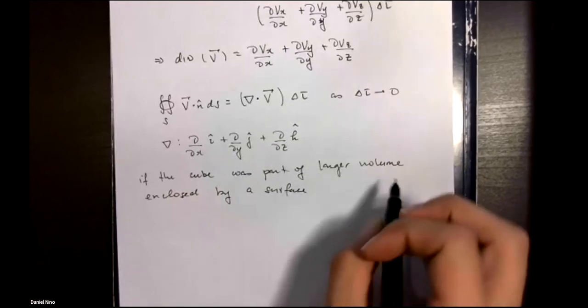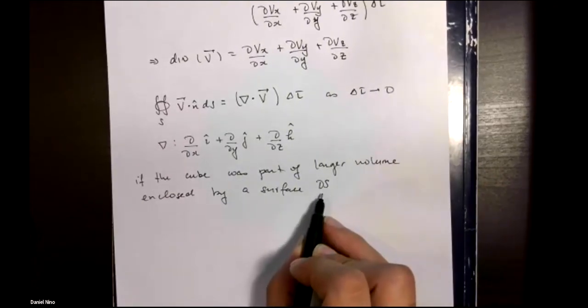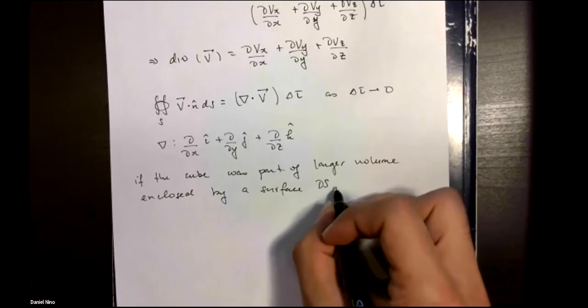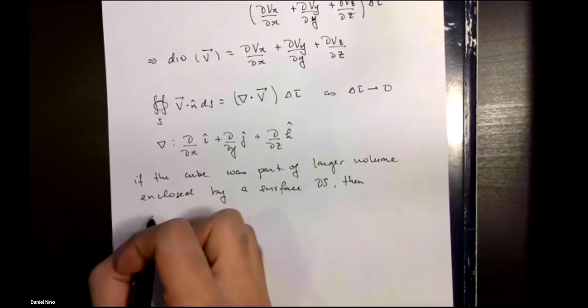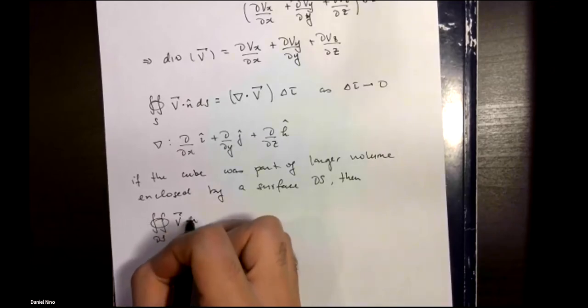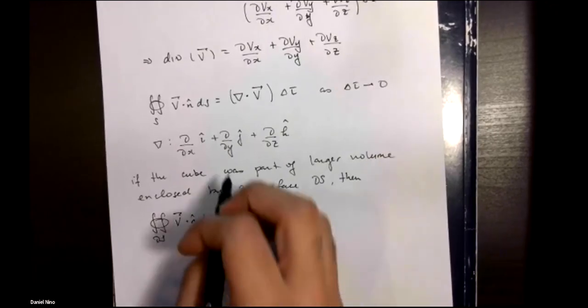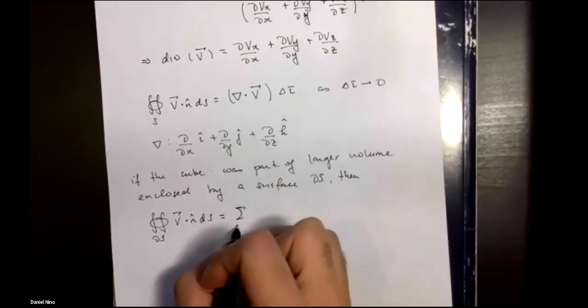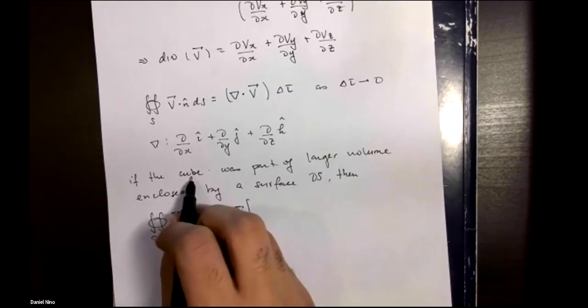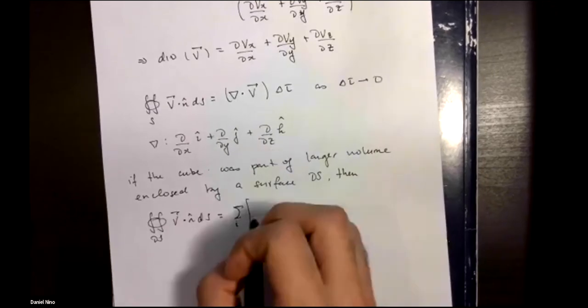We want to consider the case where we have a larger volume over which we want to calculate the flux. For the bigger volume, we're going to call the enclosed surface del s. Then to calculate the rate of flow from the entire volume, that will be given by the surface integral over del s.